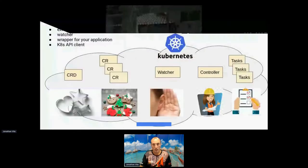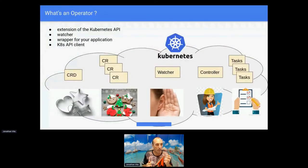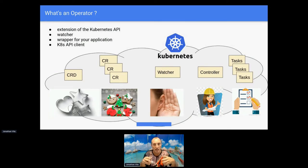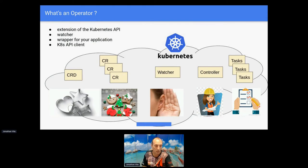So what's an operator? An operator is an extension of the Kubernetes API. You have deployments, ingresses, secrets - but let's imagine our application is a video club; there is no such element in Kubernetes. But we want to control how many video clubs we have, which are their properties, and what is the life cycle of each one. The operator gives us the opportunity to create this extension of the API by creating a 'video club' object. This is done using a cookie-cutter named CRD - Custom Resource Definition.